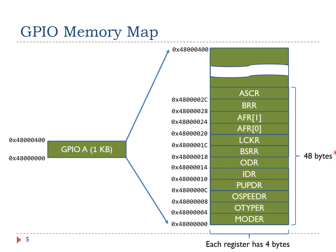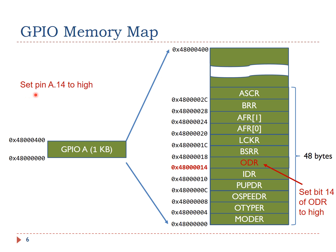Within this 48-byte memory region, the GPIO mode register MODER is mapped to the lowest memory address, and the GPIO analog switch control register is mapped to the highest memory address. Suppose we want to set the output of pin 14 of port A to high. To achieve this, we need to set bit 14 of the output data register of GPIO port A to 1.